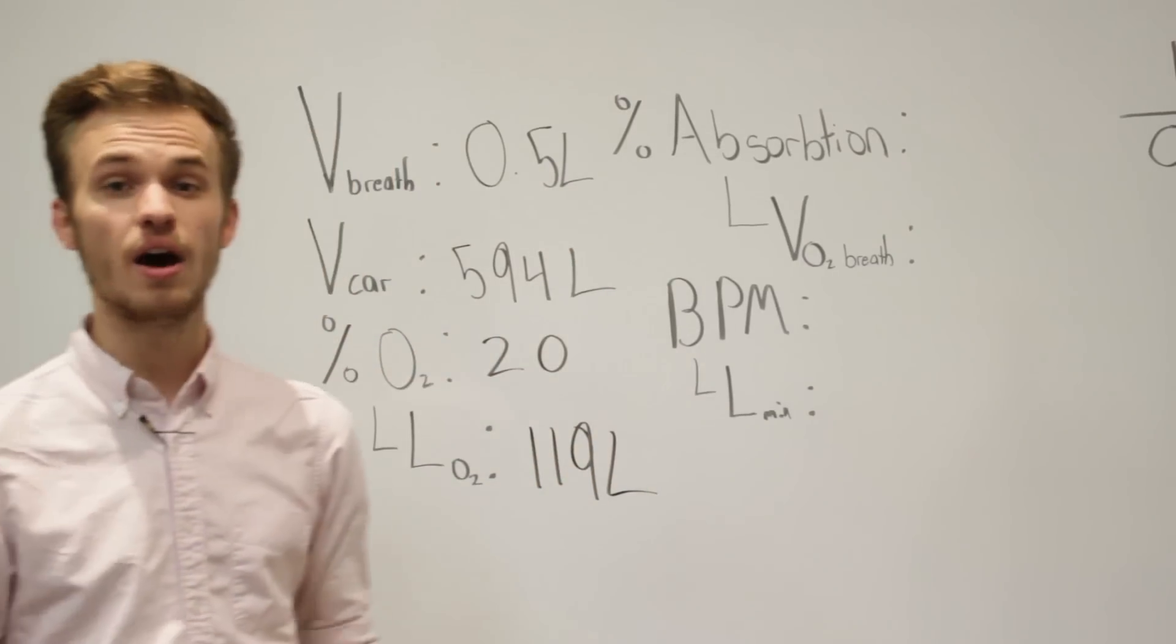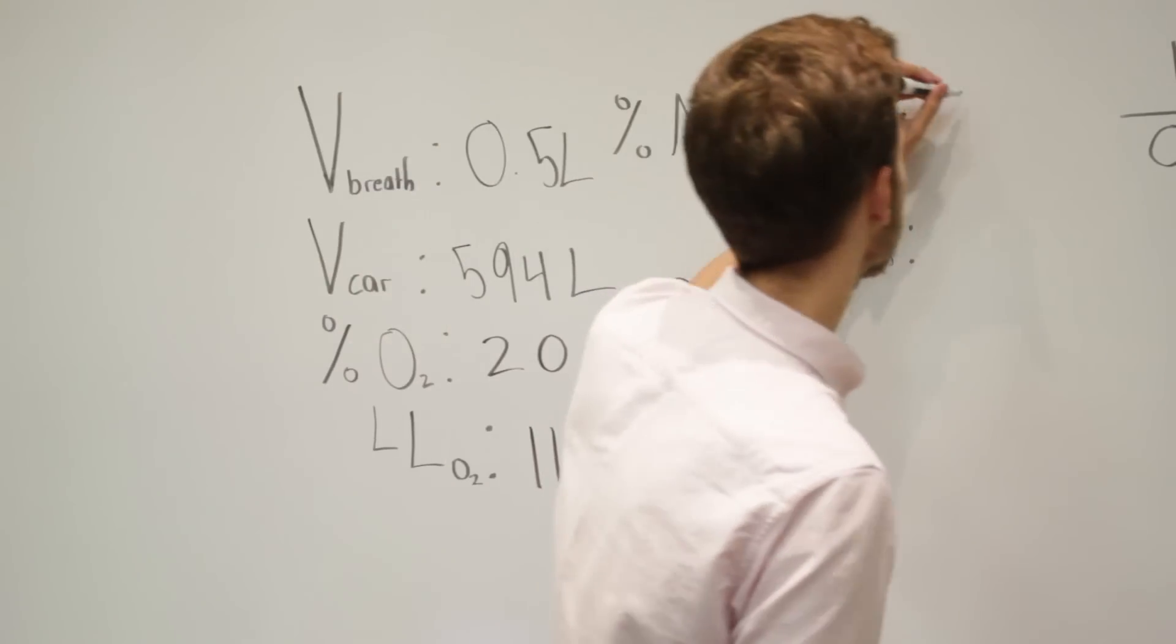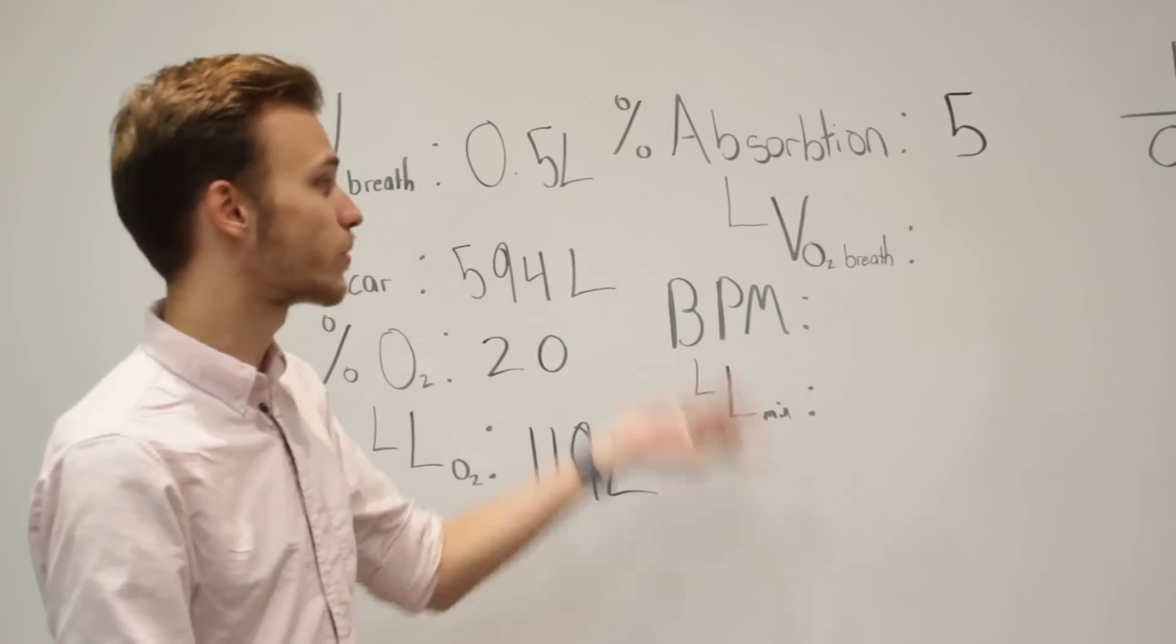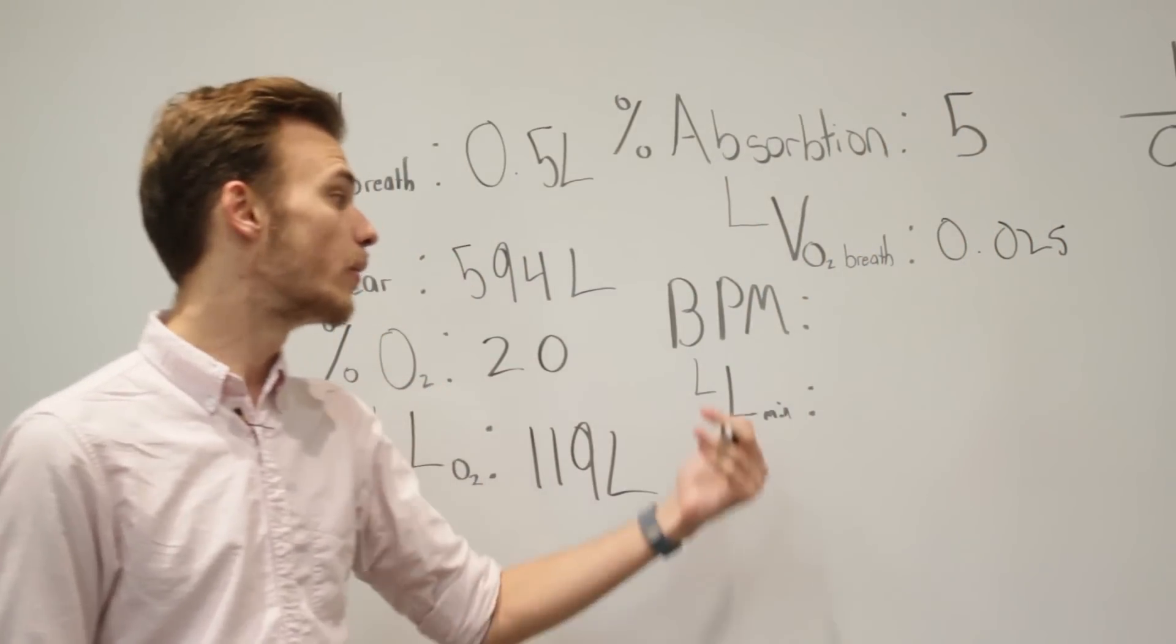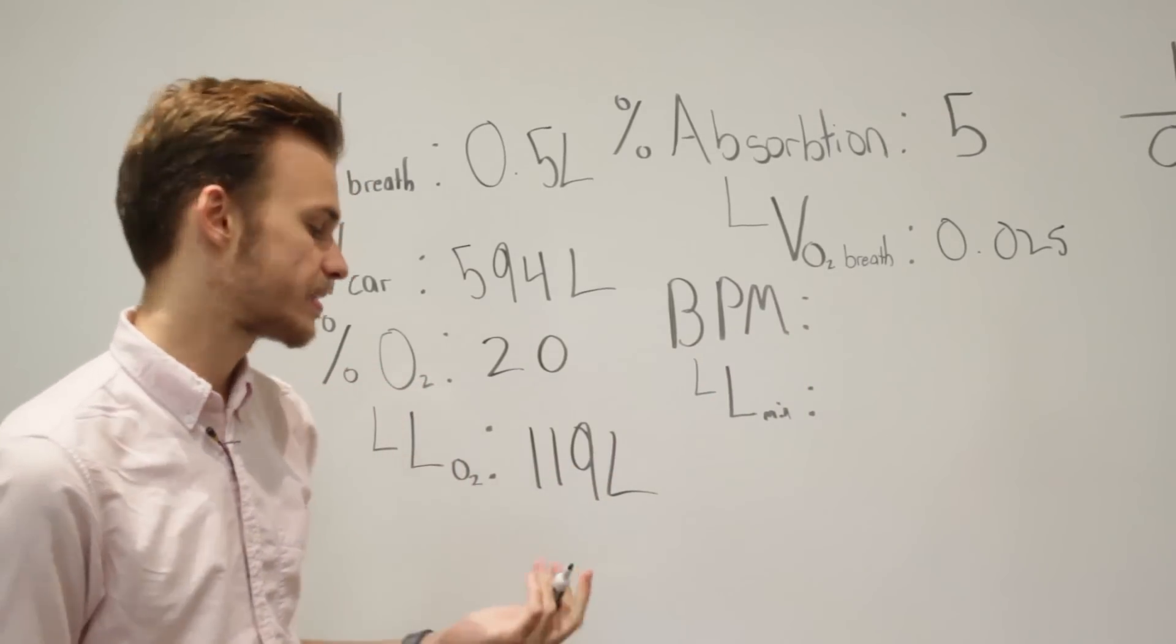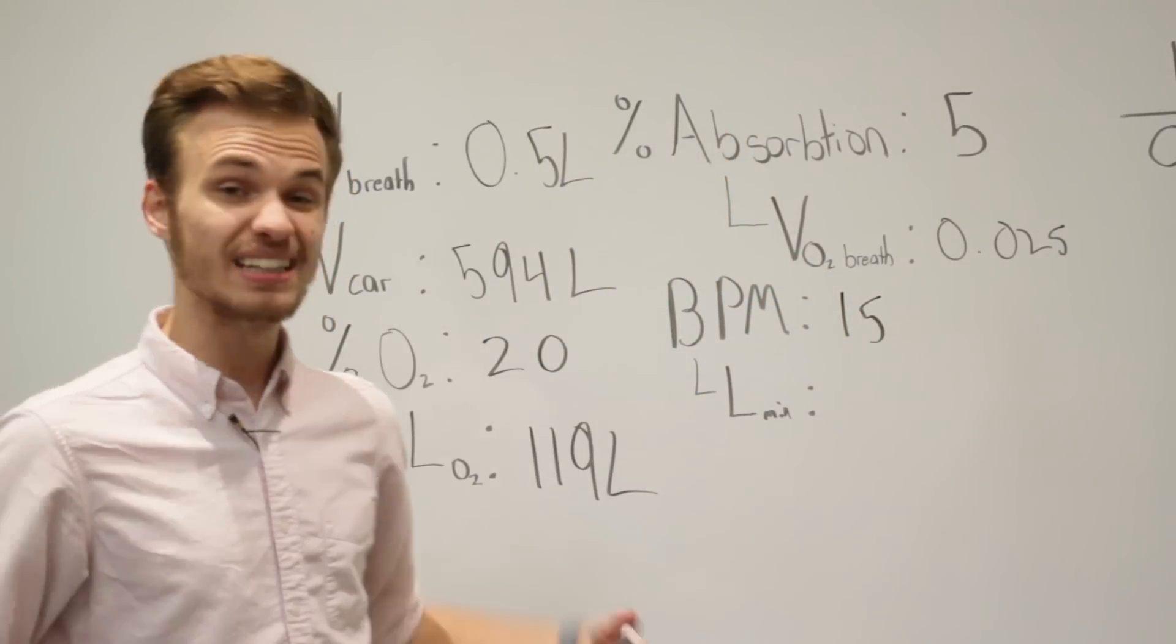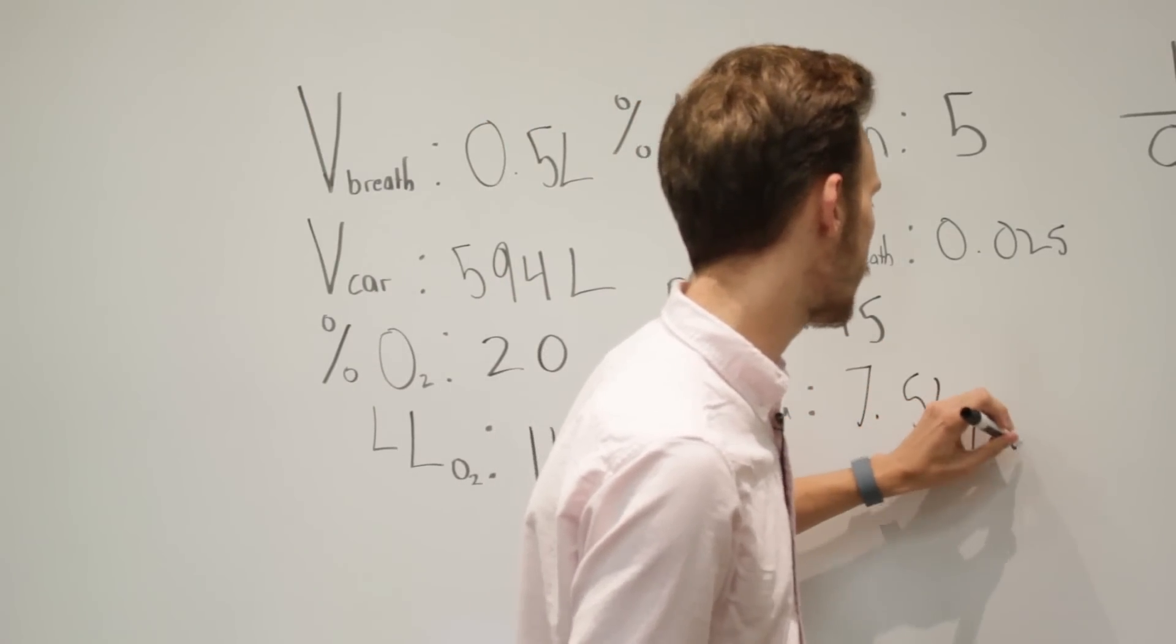Next, we need to know the absorption of our lungs. With every half liter breath, we absorb 5% of the oxygen in that half liter. So, how much oxygen we're using per breath, we can figure out with some math. 0.025 liters of pure oxygen. Now, we need to know how many breaths the average human takes per minute at rest. An adult human at rest takes about 15 breaths per minute. Working with these numbers, we can figure out how many liters per minute we're breathing. That leaves us with 7.5 liters of air per minute.